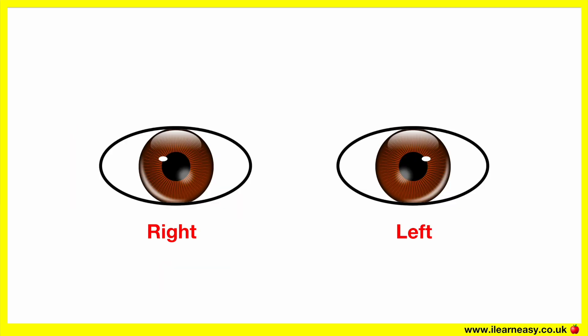A normal eye should constrict in response to bright light and dilate in response to dim light or darkness. In order to assess the extraocular muscle functions, you would ask the patient to look up, down, to the left, then up, down, to the right, and then up and down. These different positions have different names and they assess the different muscle functions. You need to assess both eyes in each position.